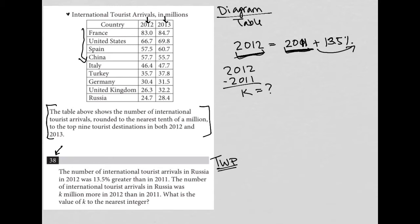Let's plug in what we do know. We know the 2012 number — in 2012, Russia received 24.7 million people. We do not know the 2011 number, so we'll call that X. This is a 13.5% increase — so how do I write a 13.5% increase?